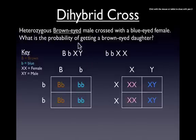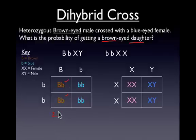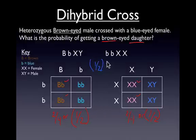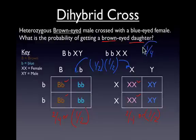So let's get back to our original question: what is the probability of getting a brown-eyed daughter? The probability of getting brown eyes — we have two possibilities out of four, or one-half. The probability of getting a daughter — again, two out of four, or one-half. Since we want both events to happen at the same time, we need to multiply these probabilities together: one-half times one-half gives us a resulting probability of one-fourth for a brown-eyed girl.